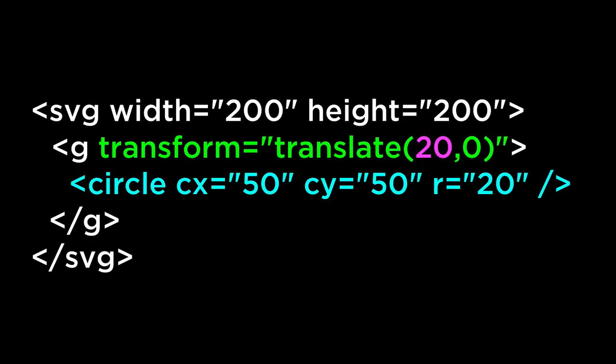The easiest transformation to understand is the translate. This transformation moves all of the elements inside of the G element a certain number of units in x and a certain number of units in y. In this simple example, we have an SVG circle whose center point is at 50,50 and has a radius of 20. The SVG group element has a translation applied to it. The first number in the translation is 20, which tells the G element to add 20 units to the x-coordinate of all elements inside — meaning add 20 units to the CX — moving the circle to the right.